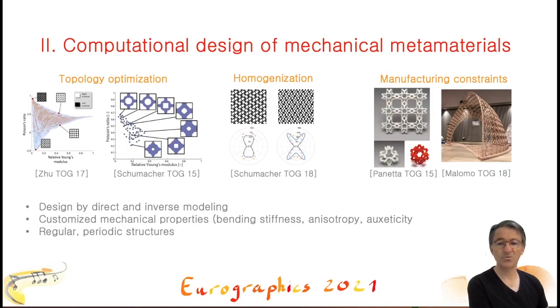Our work is also related to computational design, which is a domain in computer graphics that emerged less than 10 years ago, where geometry, mechanics, simulation, and digital 3D manufacturing come together. We can cite the work of Zhu and Schumacher, and colleagues around topological optimization and homogenization to create a space of microstructures that allow selection according to mechanical properties such as fracture strength, anisotropy, or auxeticity. Panetta and Malomo's work also takes into account manufacturing constraints. These approaches are based on direct or inverse numerical modeling, and the microstructures are generally regular or periodic.